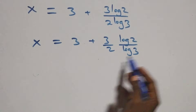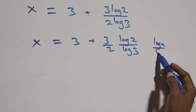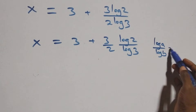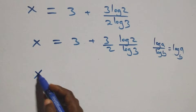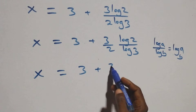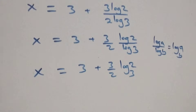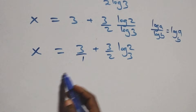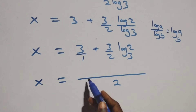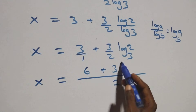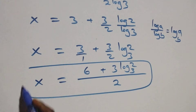We apply the change of base rule, where log a over log b is the same as log a to base b. So we have x equals 3 plus 3 over 2 times log 2 base 3. Bringing this together as a fraction, x equals 3 plus (3/2) log₂ base 3. This is the value of x.